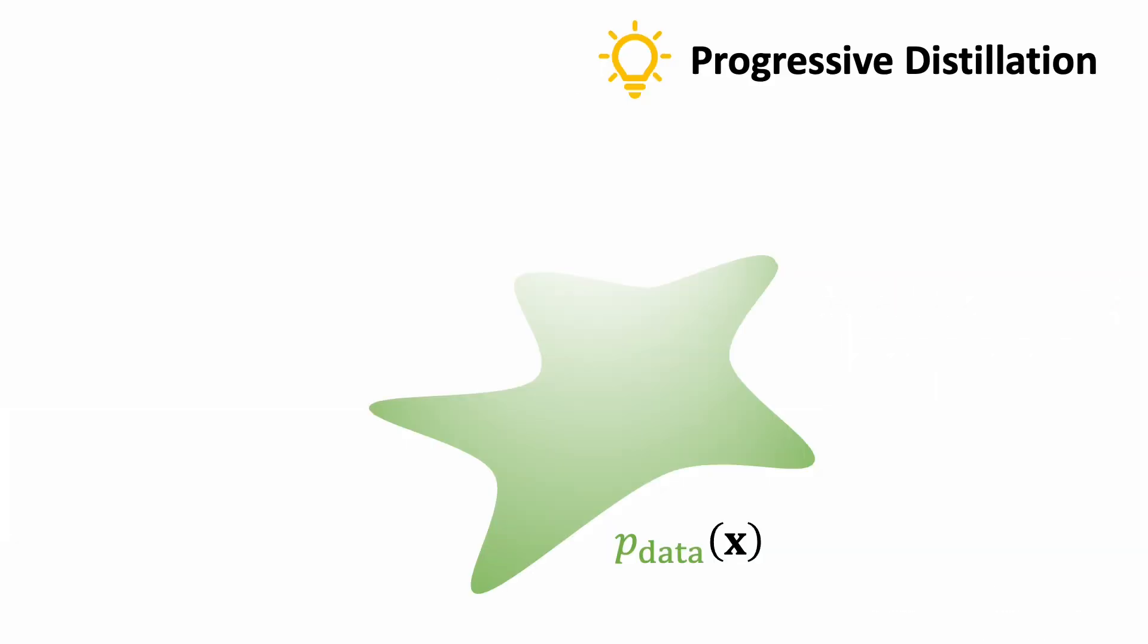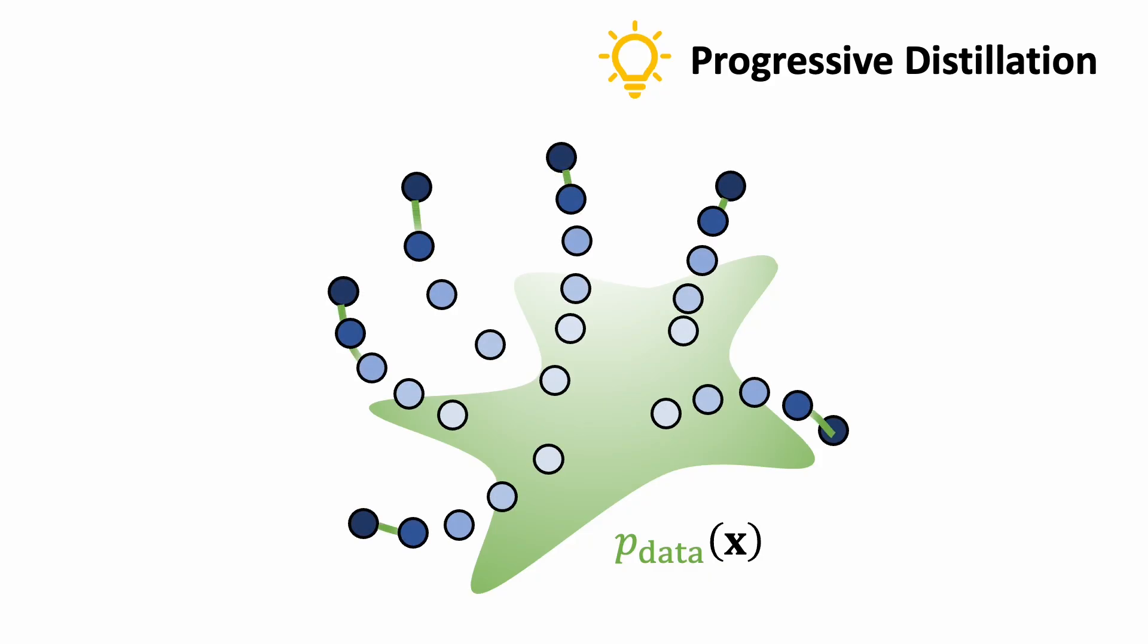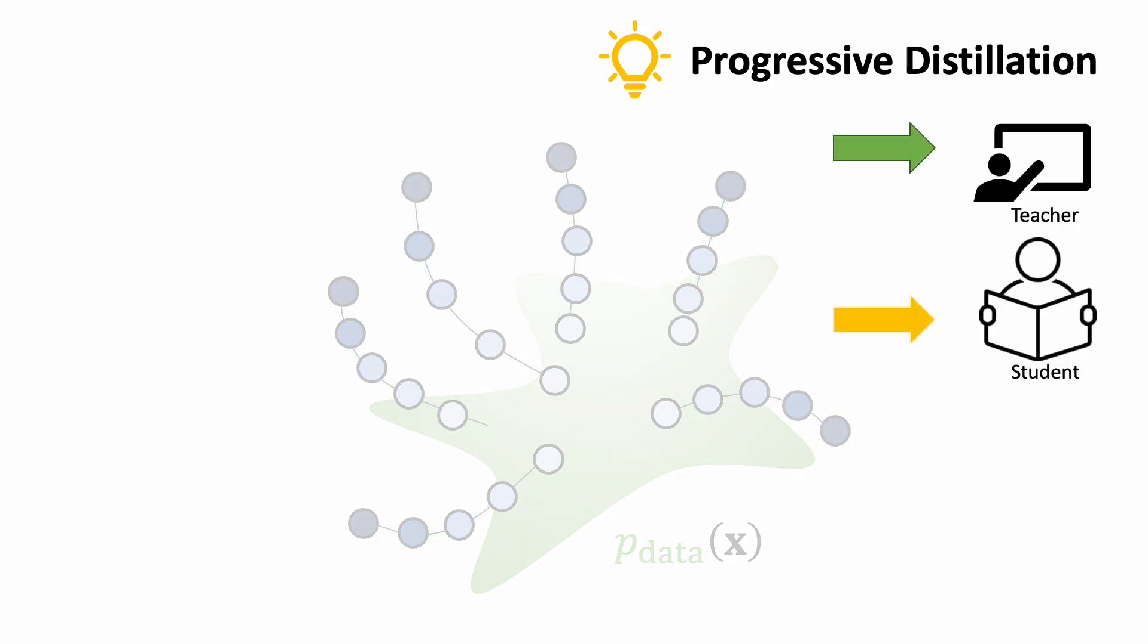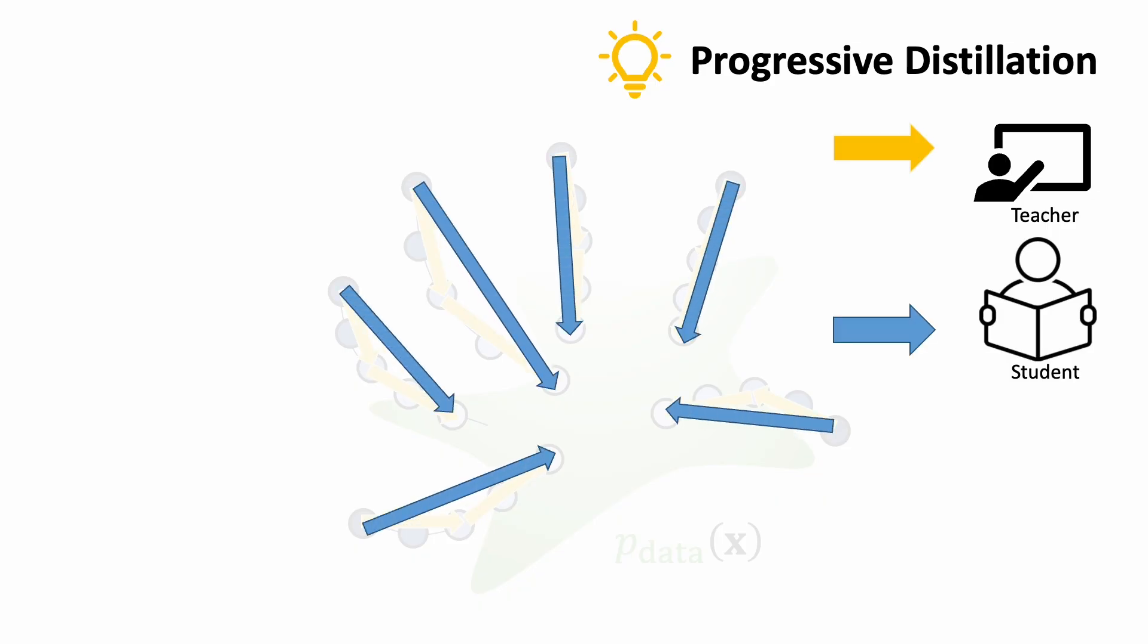Let's further reduce the number of steps using distillation. We can use the pre-trained model as a teacher, and teach a student denoising network to use one sampling step to reproduce the output of the teacher network using two sampling steps. So after this distillation process, we halve the number of sampling steps. We can ask the student model to be a new teacher model, and repeat the process until we reach the target sampling steps.